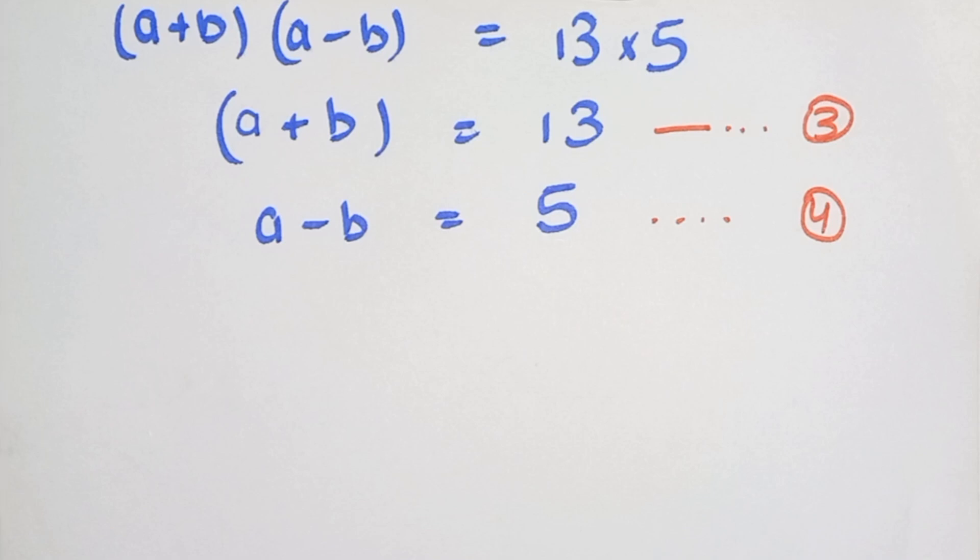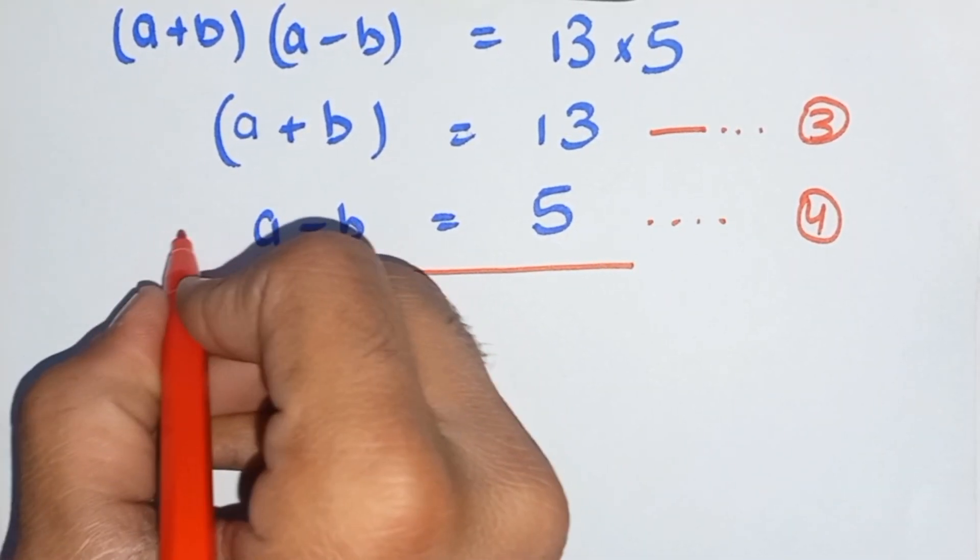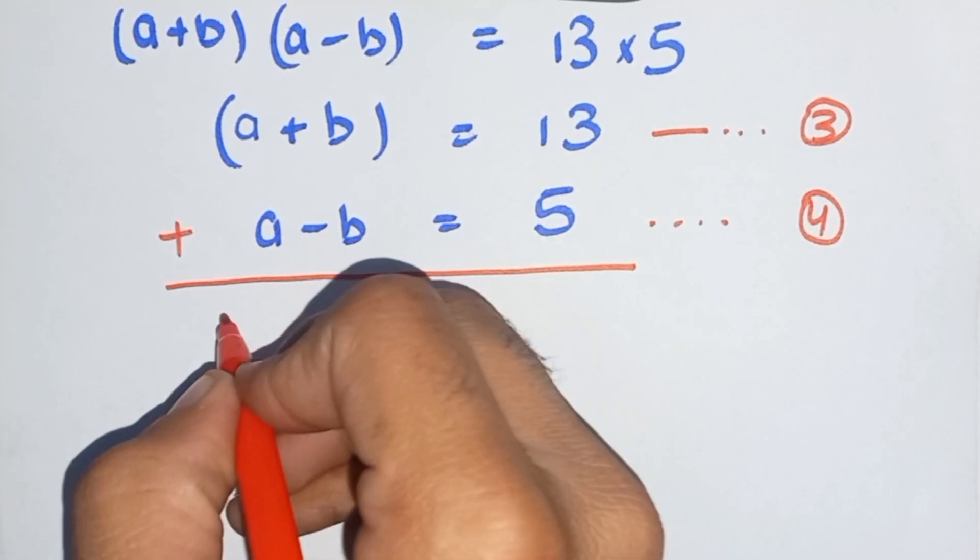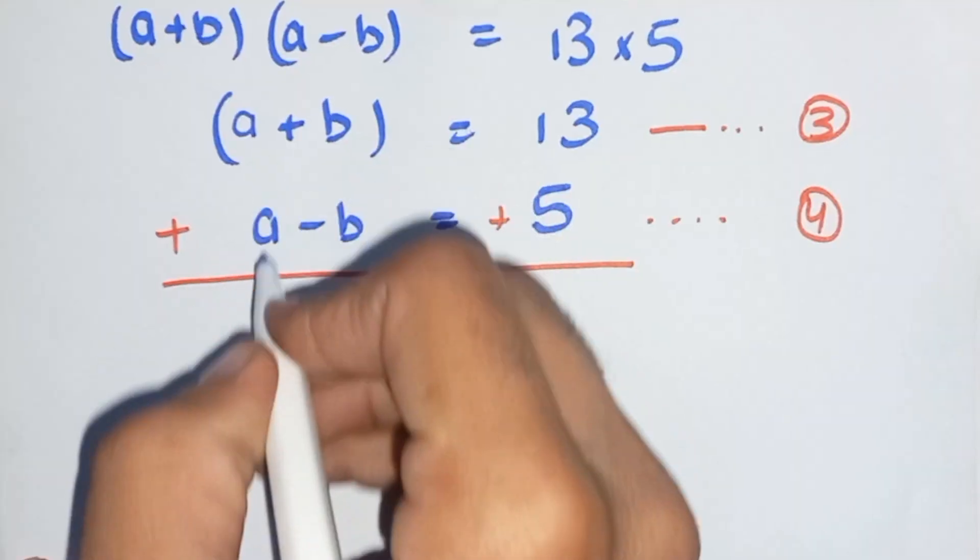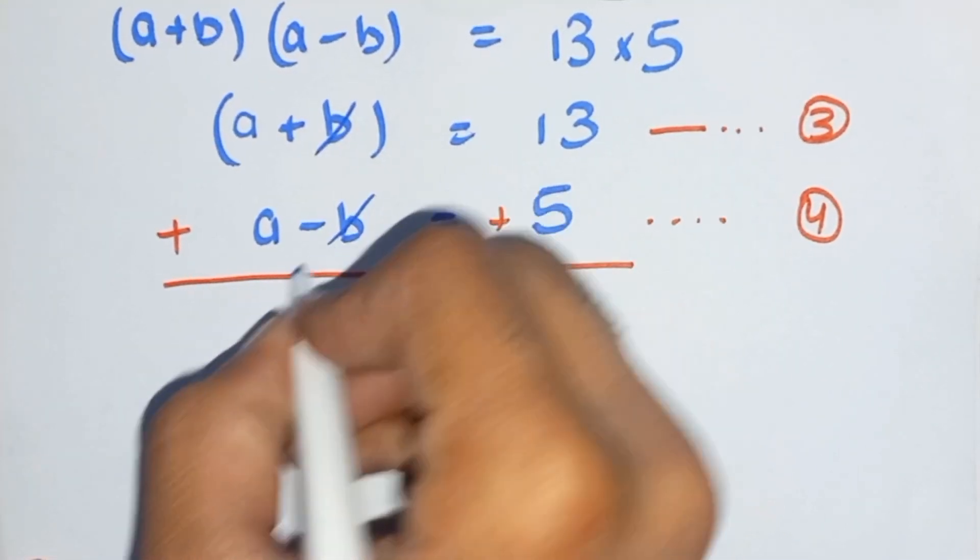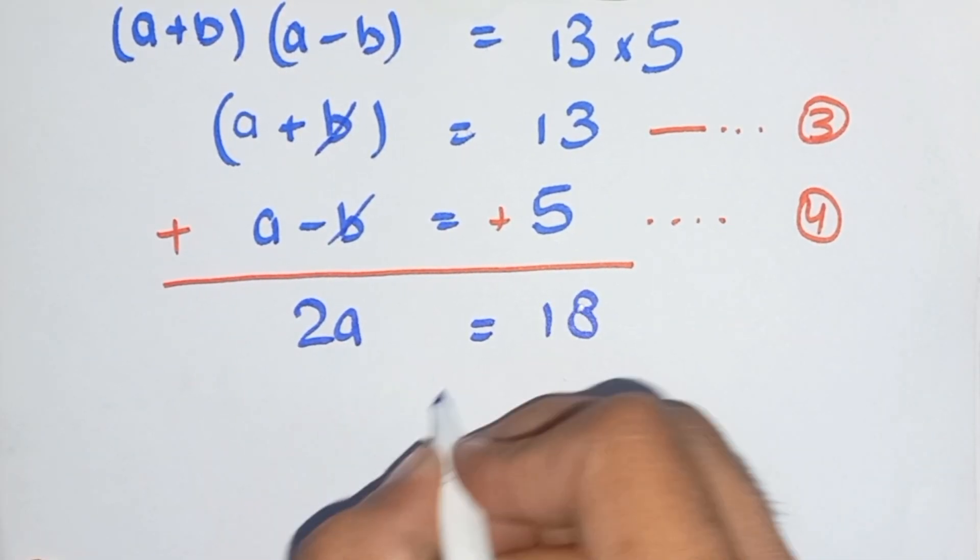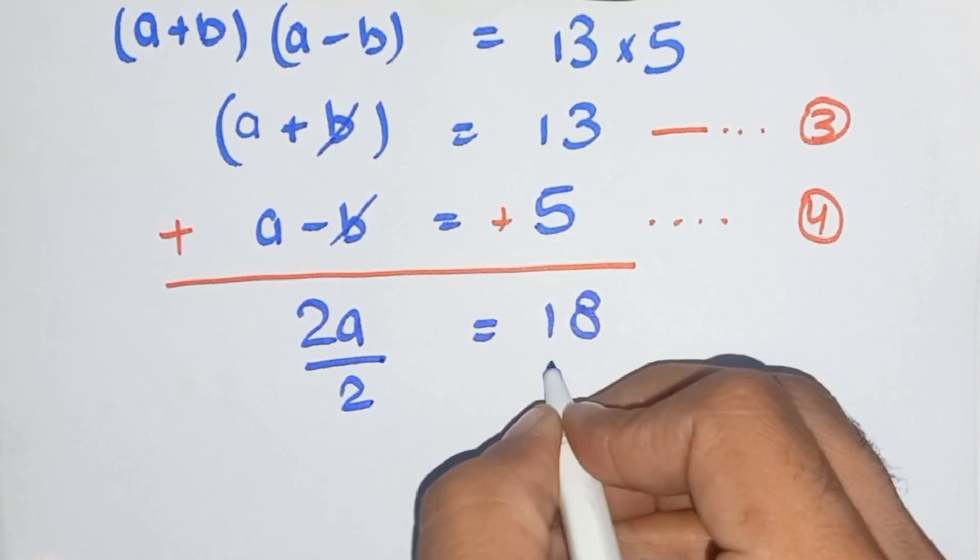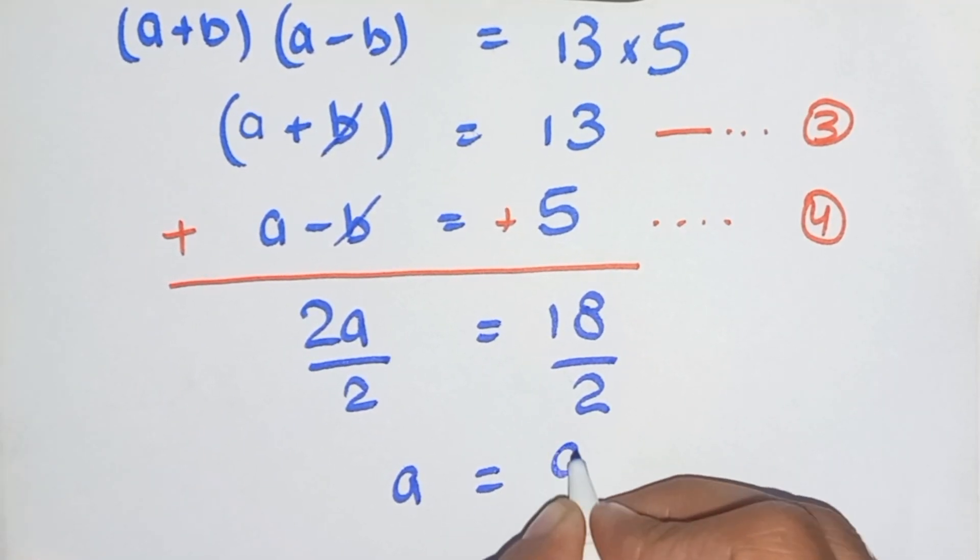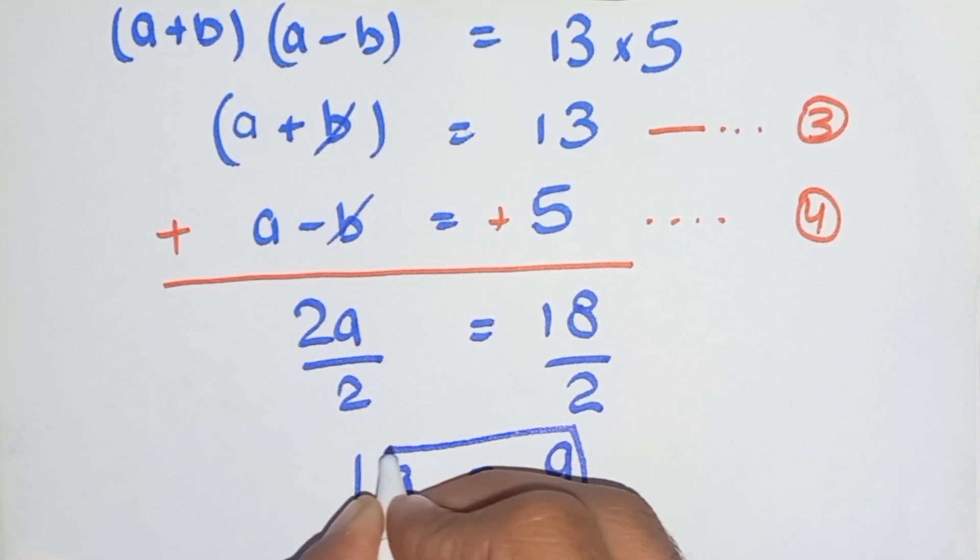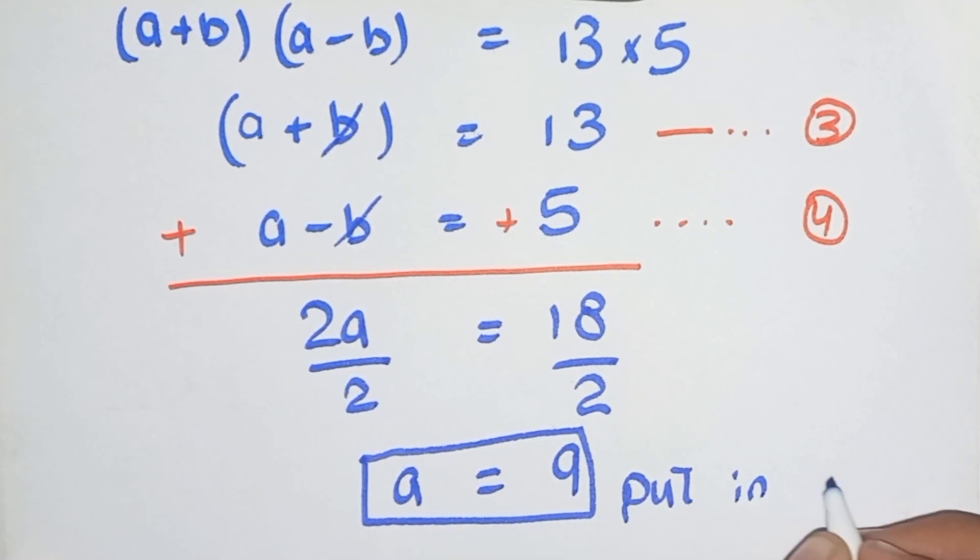So as we add these two equations, these two terms cancel, 2a equals 18. Divide by 2, so now a equals 9. Put a is 9 in equation 3.